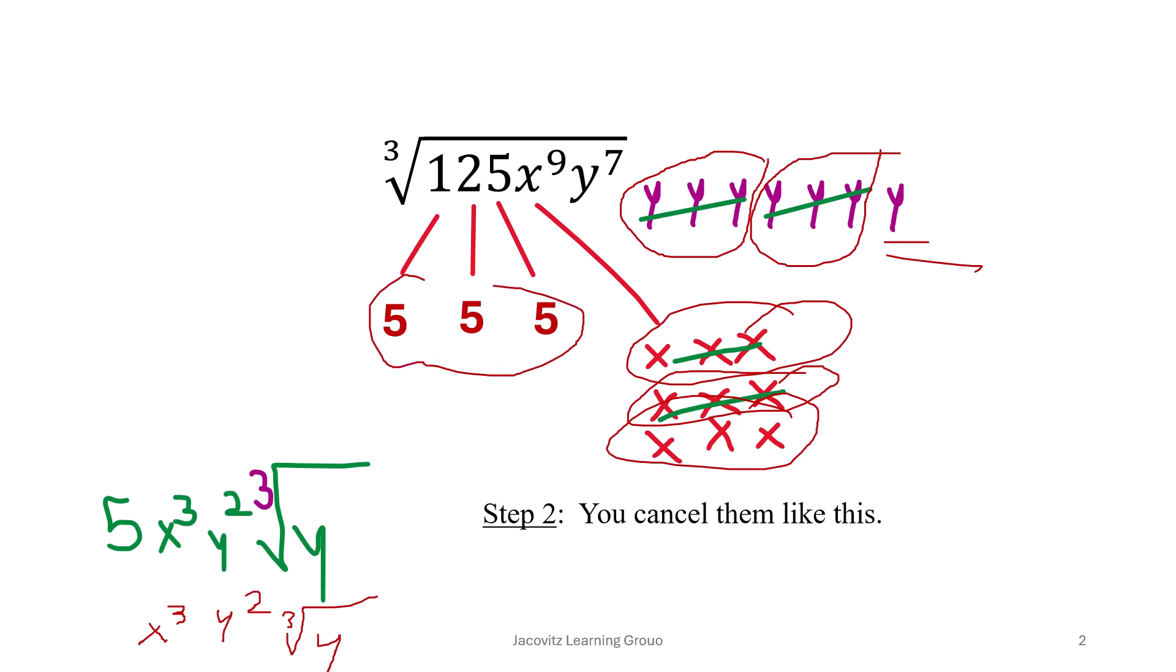So that's why this is here. And then this is 3 sets of 5's, so they just come out. And that's why this is your answer. Easy one. Let's move on.